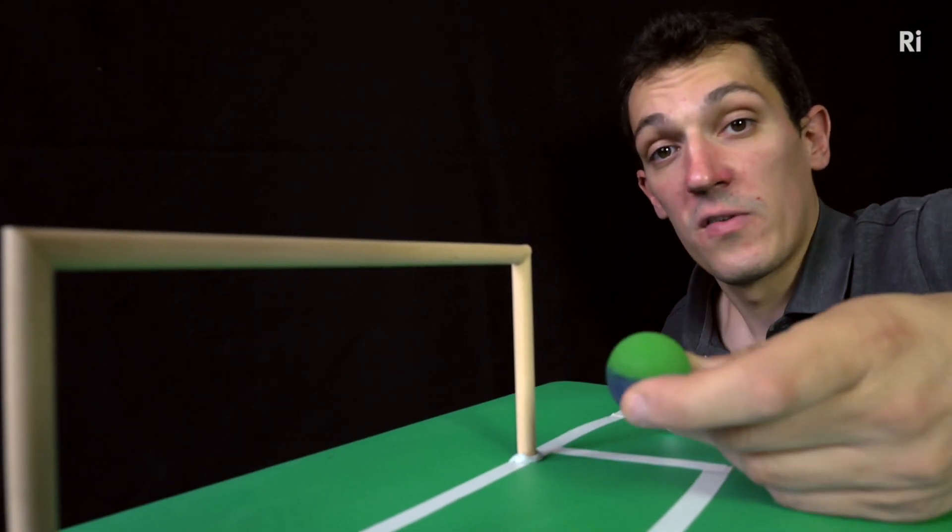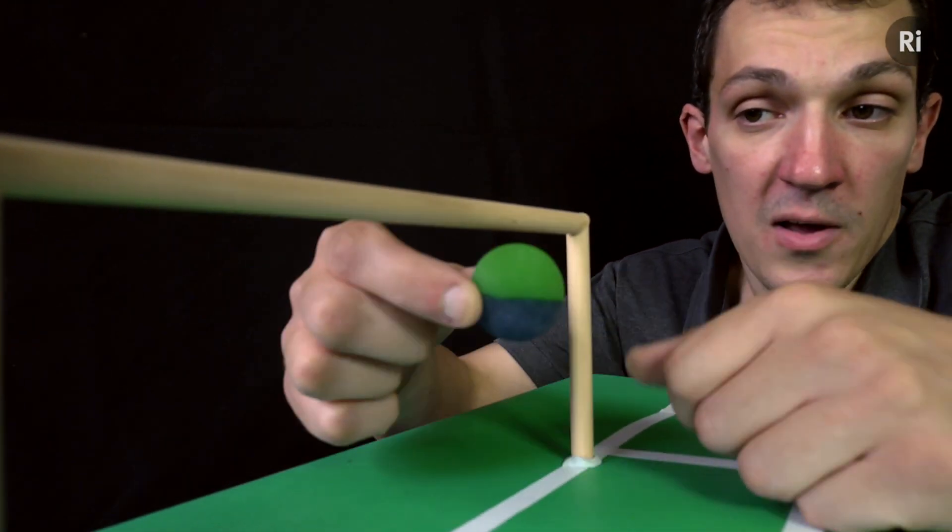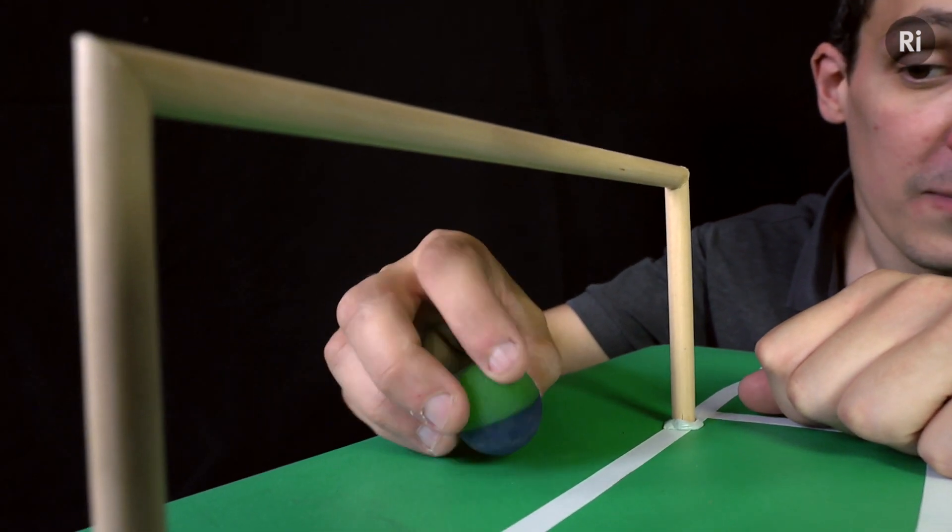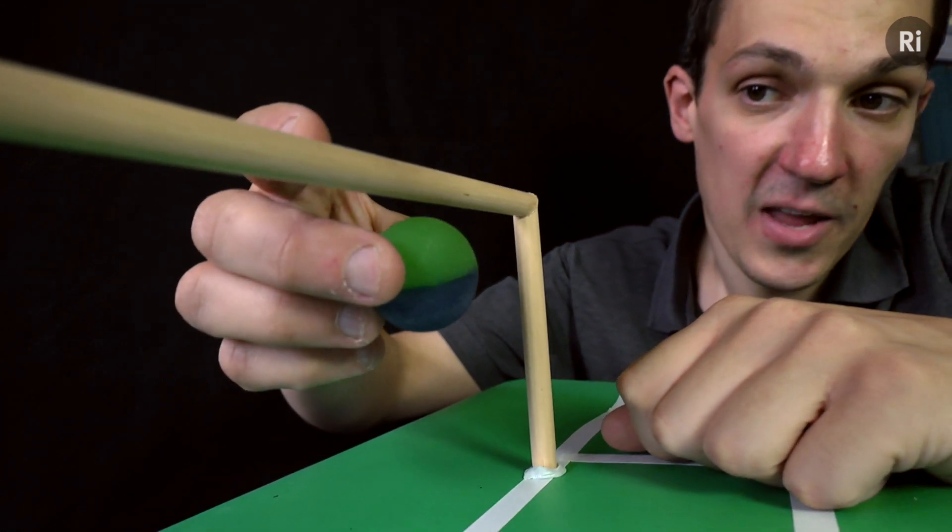So because the ball is moving fast as it hits and strikes a glancing blow on the crossbar, it picks up lots of spin. And when this bounces, this constitutes backspin. So the ball kicks back and hits the crossbar again.